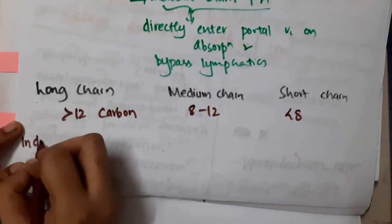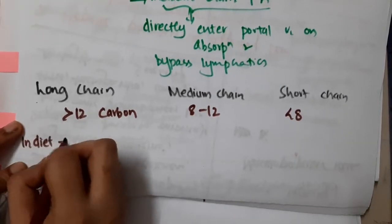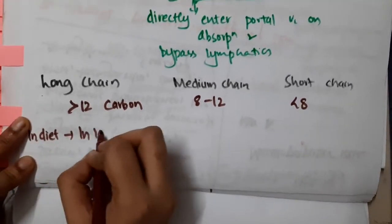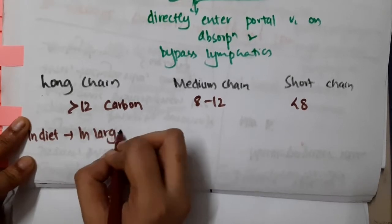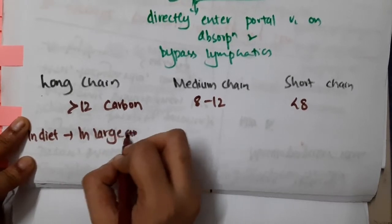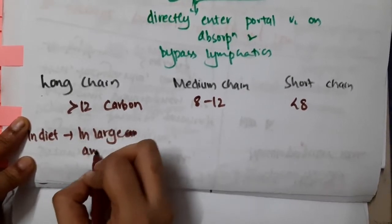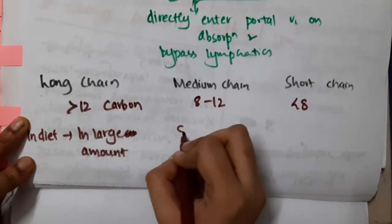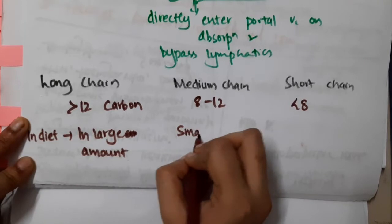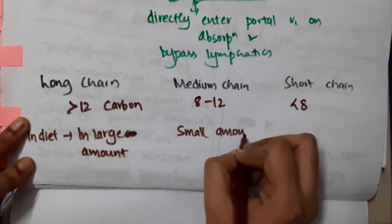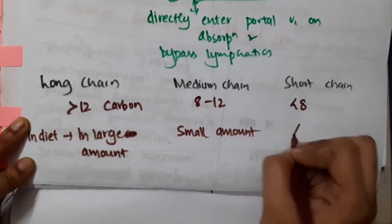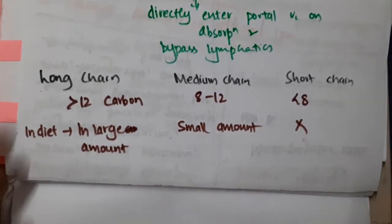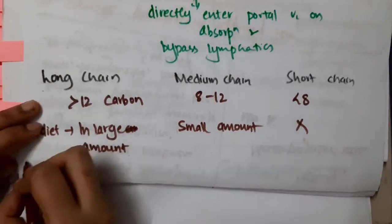In the diet, long chain fatty acids are present in large amounts, whereas medium chain fatty acids are present in small amounts, whereas short chain fatty acids are completely not present in the diet.